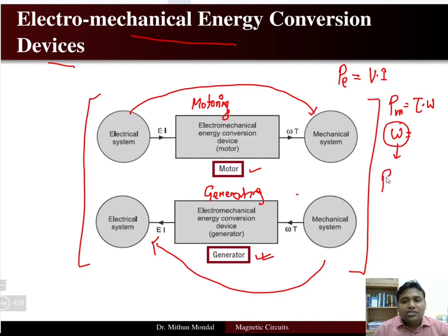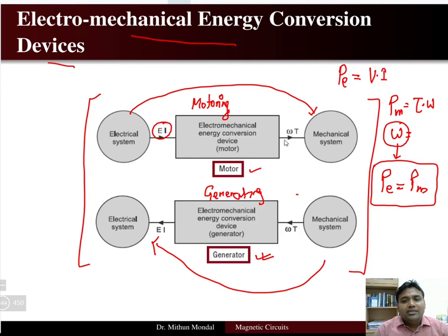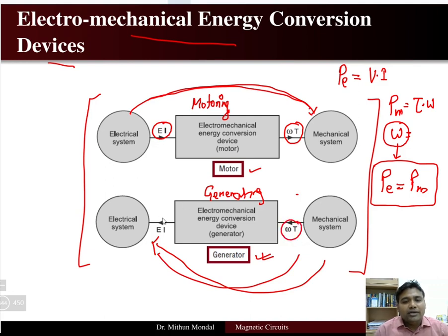Under steady state conditions, electrical power will be equal to mechanical power, so the system will be in equilibrium. The product of voltage into current is converted to the product of torque into omega. From mechanical to electrical, torque into omega is converted to electrical energy, that is voltage into current.